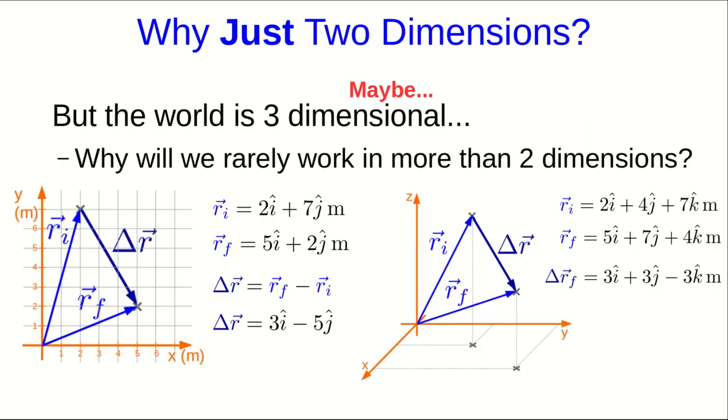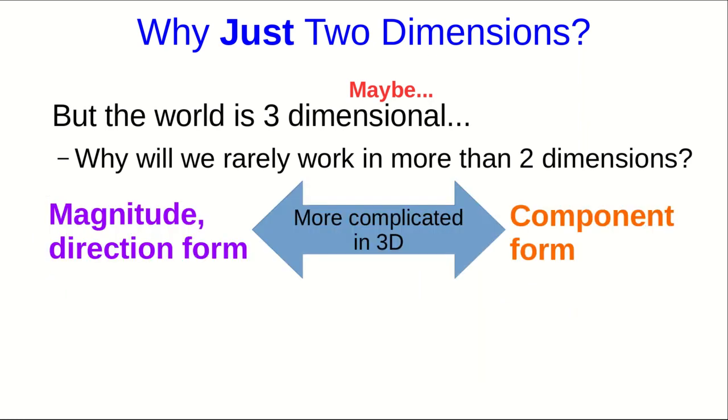Now, I don't want you to think that there's no difference between working in two dimensions and working in three. For example, the job of going from magnitude direction form to component form, or the other way, is quite a bit more complicated in three dimensions than it is in two. But that's just a mathematical complication. The point is that for the moment, there's no physics that we need three dimensions to describe that we can't describe just as well in two dimensions.